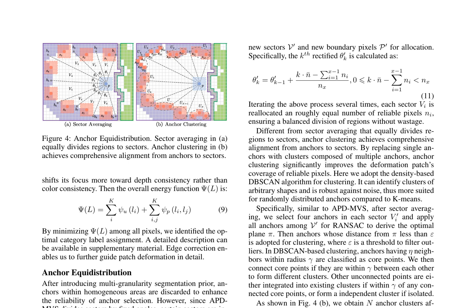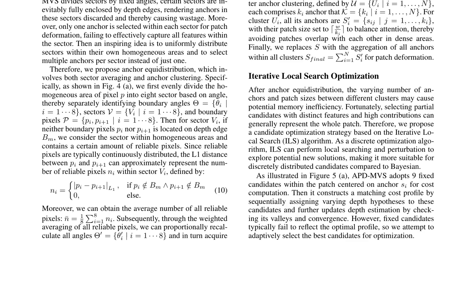In sector averaging, the homogeneous area of a pixel is divided into eight sectors based on angle, and the number of reliable pixels in each sector is calculated using the L1 distance between boundary pixels. The average number of pixels is then used to proportionally recalculate the angles and reallocate the sectors, iterated to achieve a balanced division of regions without wastage. Anchor clustering is then applied using the density-based DBSCAN algorithm to cluster anchors, which can identify clusters of arbitrary shapes and is robust against noise. The clustering process involves selecting four anchors in each sector, applying RANSAC to derive the optimal plane, and then filtering out outliers.